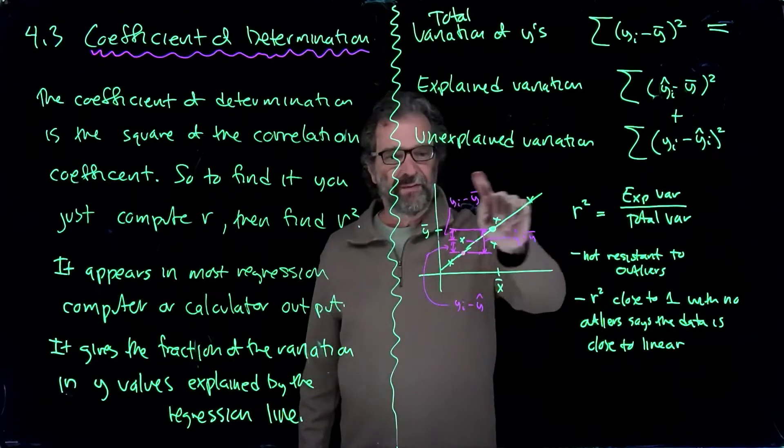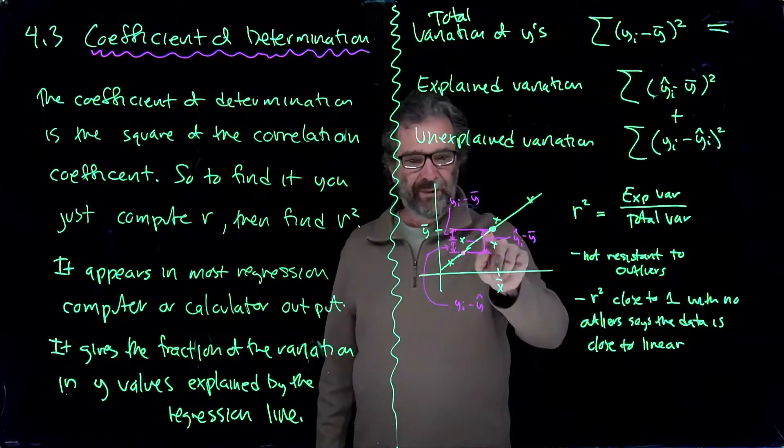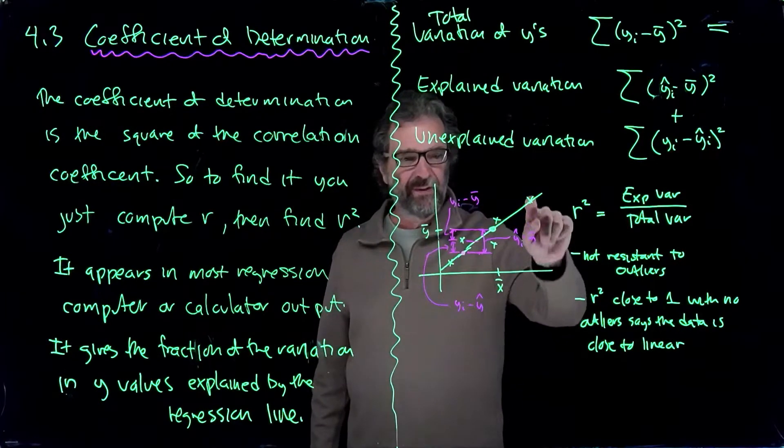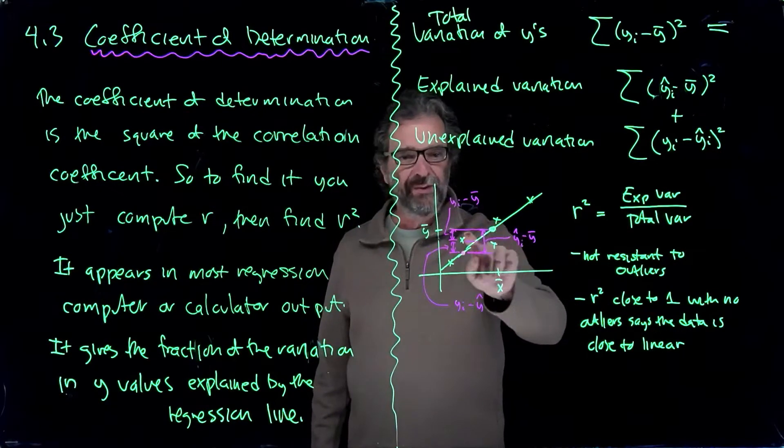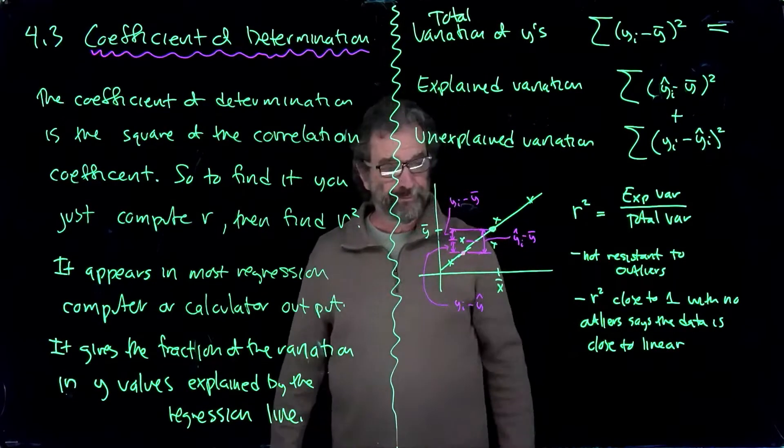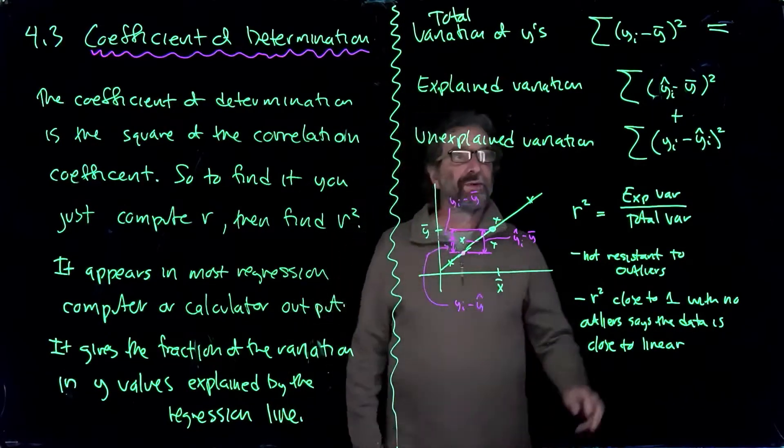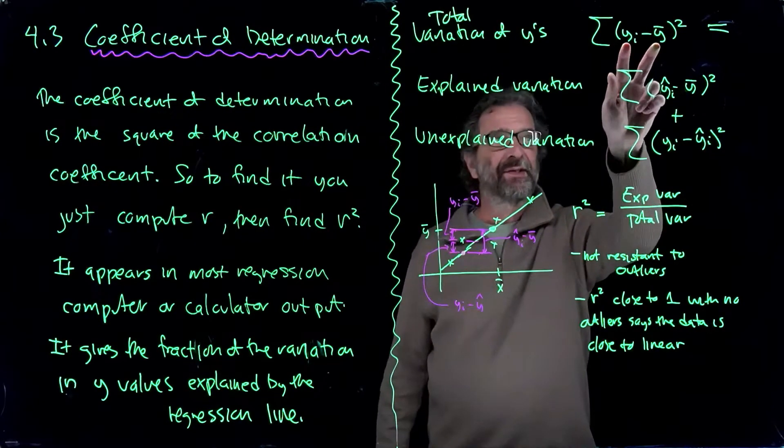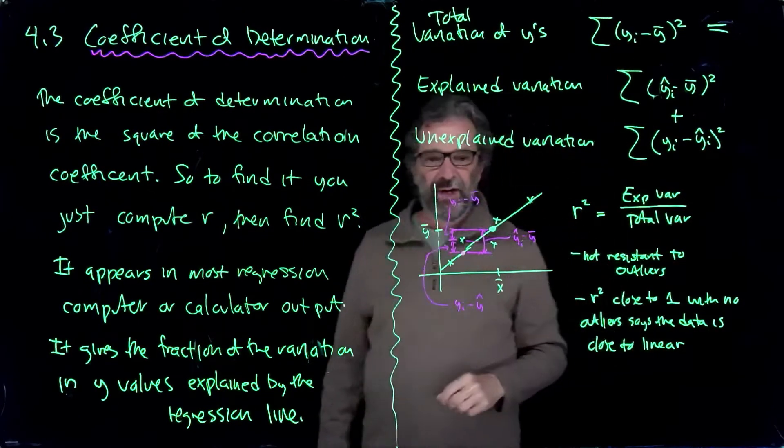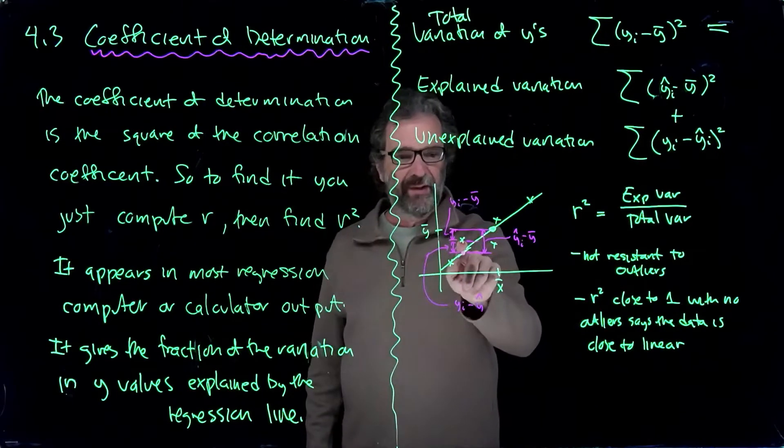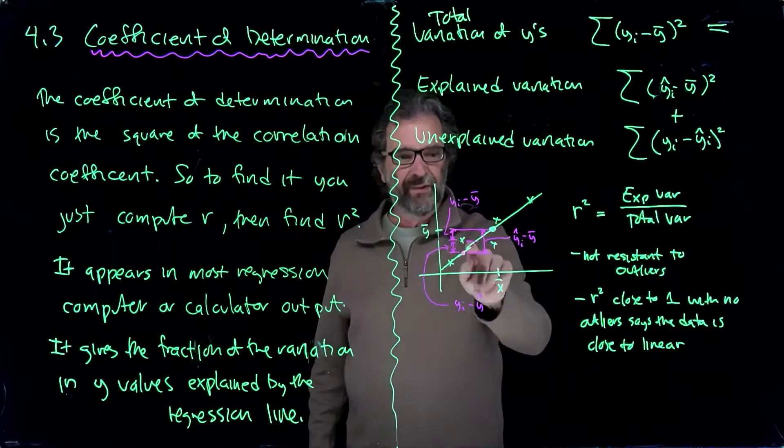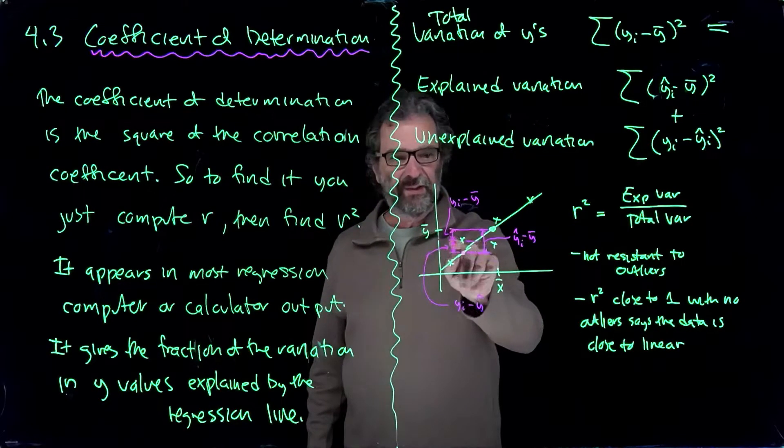So here's a picture of a regression line. Here's a picture of where the average of the y's is. It turns out the regression line goes through the point y bar x bar, so I just put it there for fun. And so if we want to find the variation, which is the squares of the distances away from y bar, for each point, here's an example point here, you would take the distance that point is from the mean. So here's the mean here.